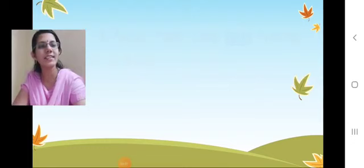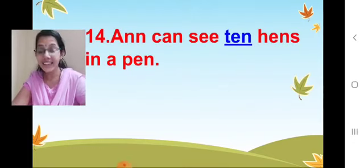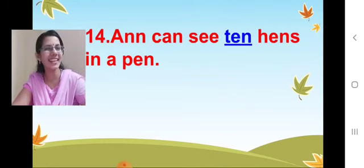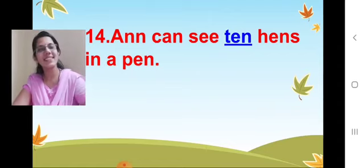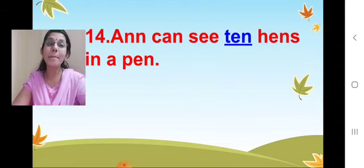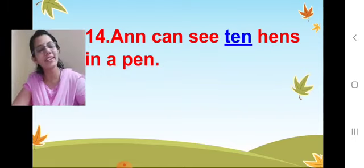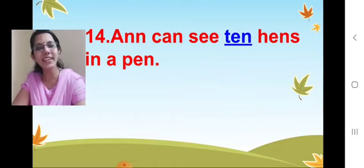Now comes our 14th one. 'Ann can see ___ hens in a pen.' How many? Ten. You all know the spelling for ten. 'Ann can see ten hens in a pen.' Done. Very nice. Good children — you remember the lesson very nicely. Shall we move on to the next one?